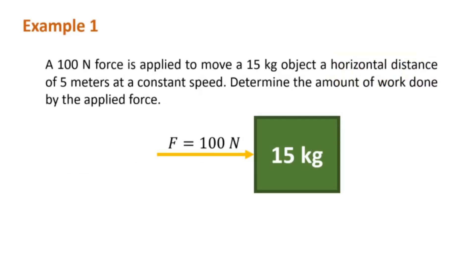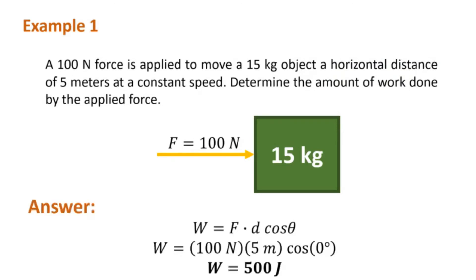A 100-newton force is applied to move a 15-kilogram object a horizontal distance of 5 meters at a constant speed. Determine the amount of work done by the applied force. Using our formula for work, substitute 100 for F, 5 for d, and the angle is zero because the force and the displacement are both rightward, giving us a value of work of 500 joules.